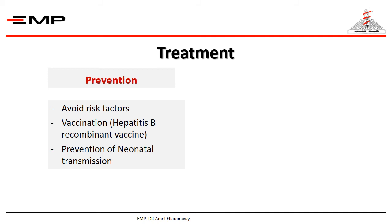The current recommendation for neonates of mothers who are hepatitis B surface antigen positive is to give hepatitis B immune globulins 0.5 milliliter intramuscular injection with the first dose of hepatitis B vaccine within 12 hours after birth.